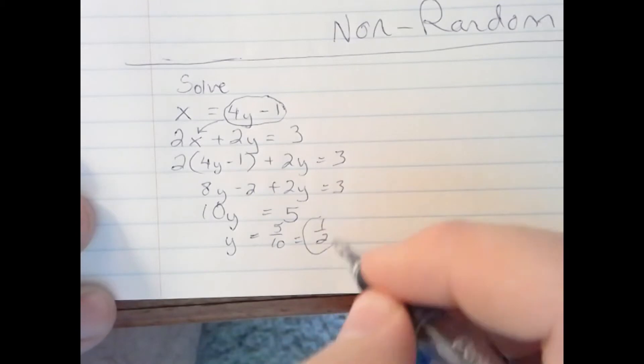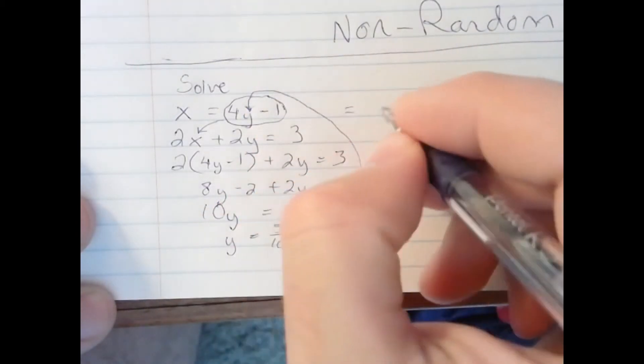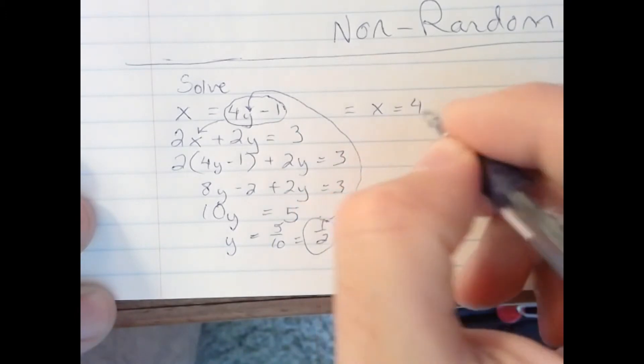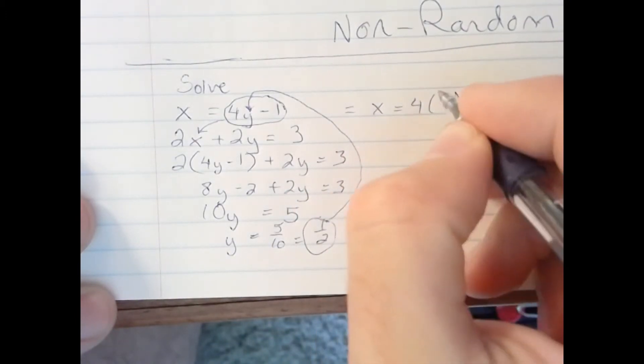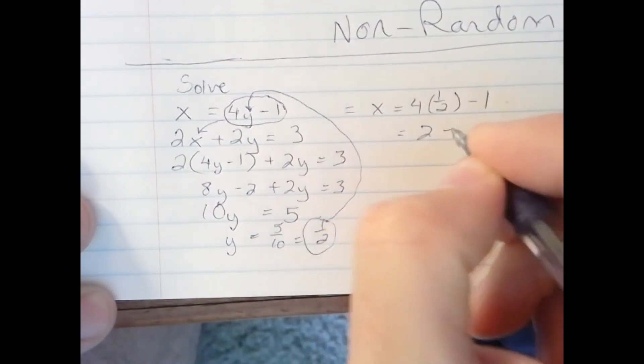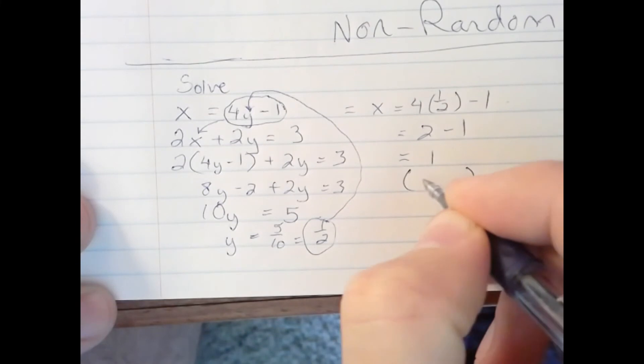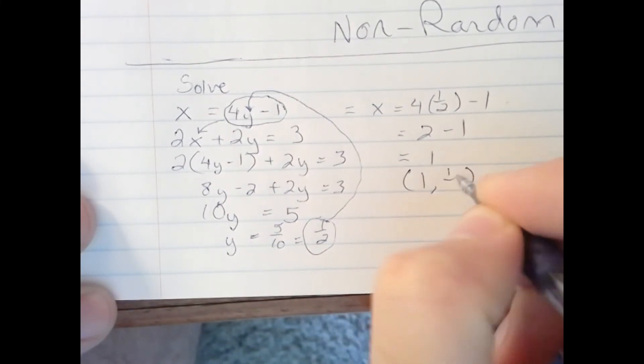Now that I know the y coordinate, I can go back up here to find the x coordinate. x equals 4 times y minus 1, but y is 1 half. Half of 4 is 2. 2 minus 1 is 1. So the solution to this is 1 comma 1 half.